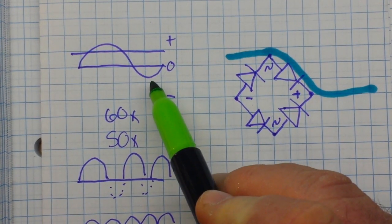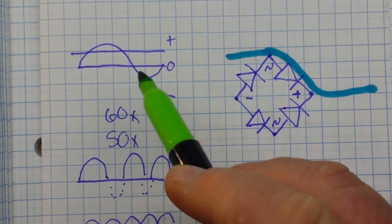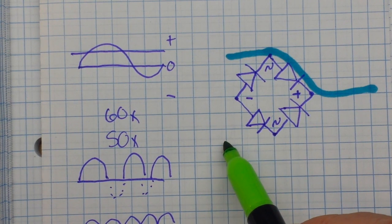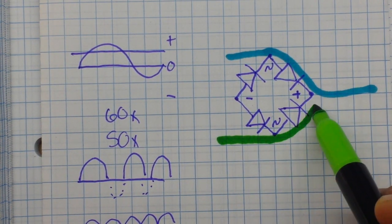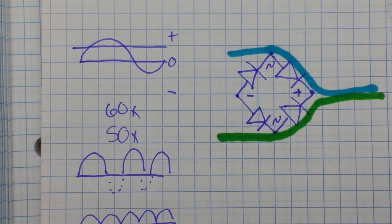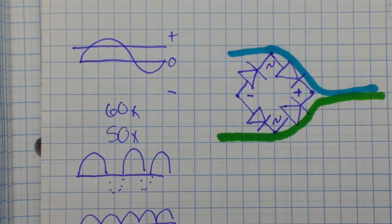But when this part of the sine wave is more positive than this part, the current comes in here, flows up through here. See how simple that is? It flips it around. Makes it really simple for everybody.